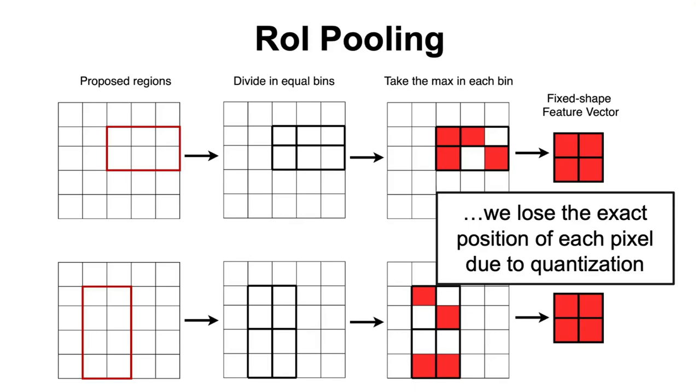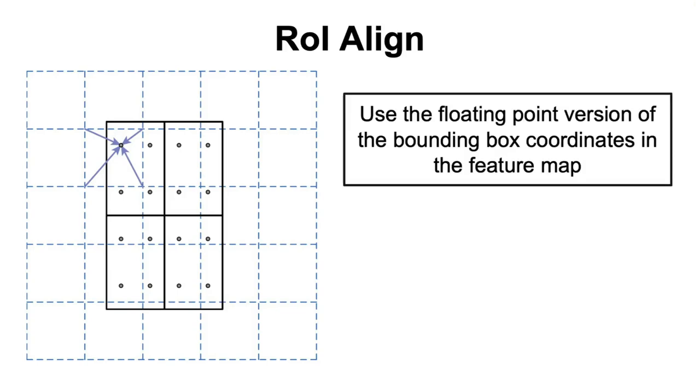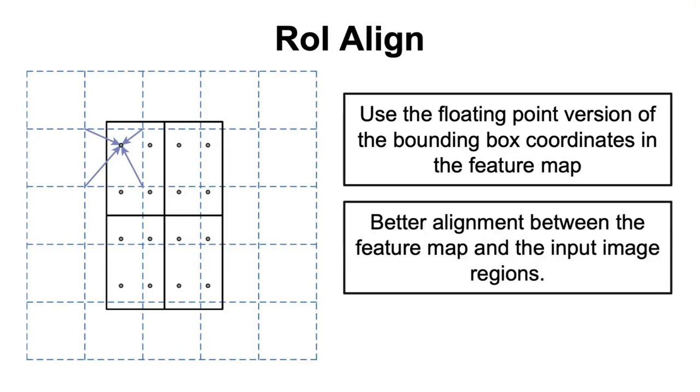This may not be a bad thing for object detection, since the corners of the bounding boxes do not have to be that precise, but for mask prediction it is pretty bad, since you would like to know the exact position of each pixel. To attain this more fine-tuned prediction for each pixel in the mask, the authors introduced the region of interest align layer, where they do not quantize the proposed region coordinates, but instead use the floating-point values in the feature map, resulting in a bounding box that is better aligned with the original region in the input image.